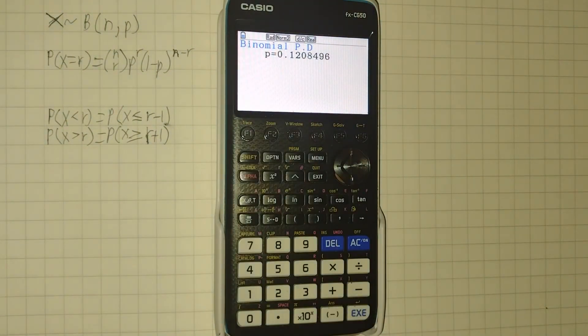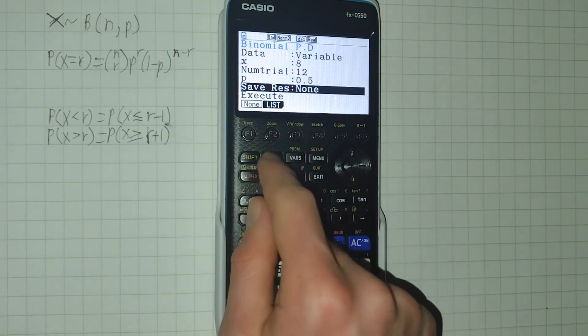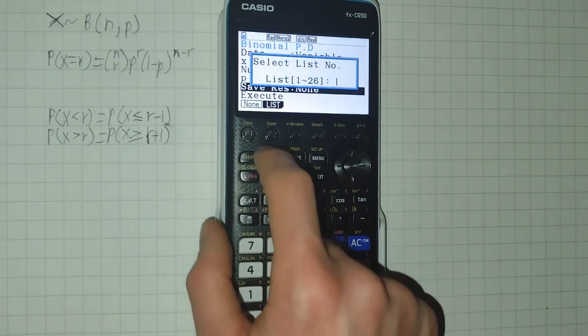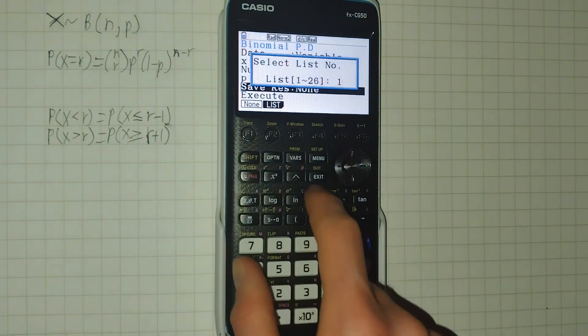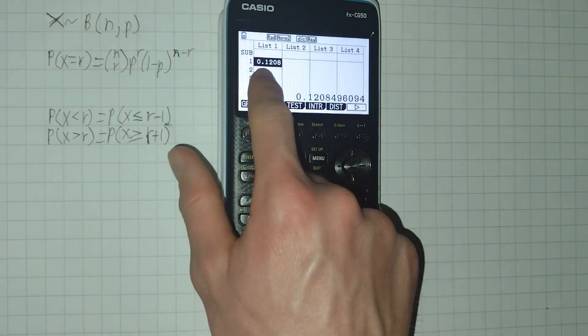You can save this into a list by specifying on this one here, clicking F2, and specifying a list number, such as 1. Then if I click exit, you'll see the values here.